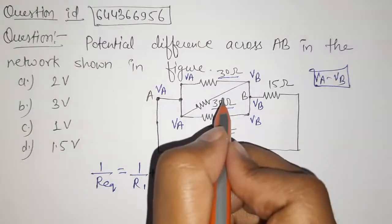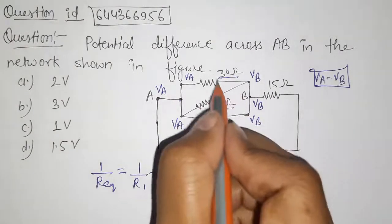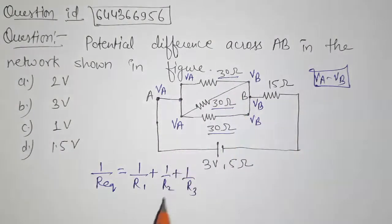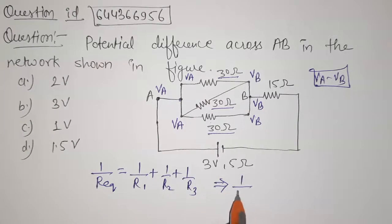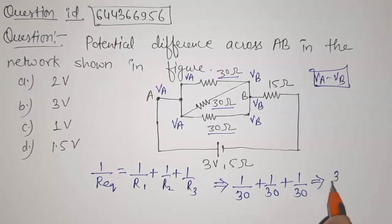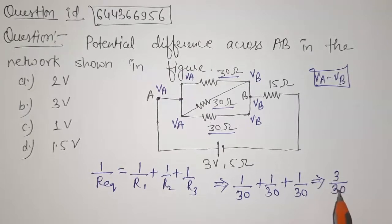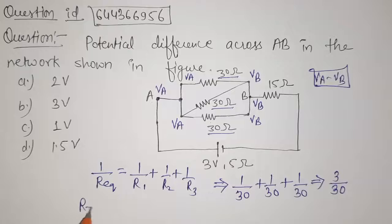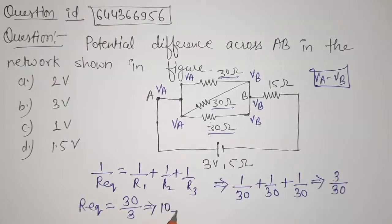The value of R1, R2, and R3 are all equal — each is 30 ohms. So we have 1/30 plus 1/30 plus 1/30, which equals 3 times 1/30, that is 3/30. Therefore R_equivalent equals 30 divided by 3, which is 10 ohms.